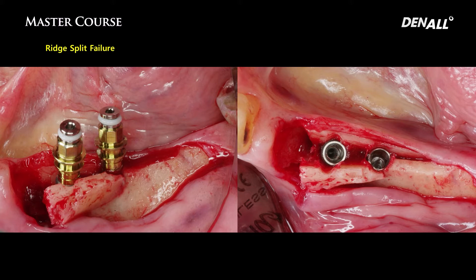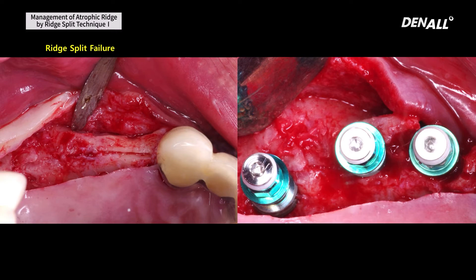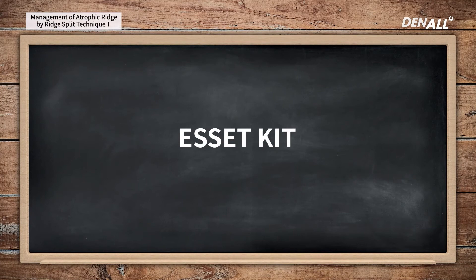In one example, the cortical bone was too thick — it did not split, but fractured. In another case, the split was done in the upper jaw where the cortical bone was too thin, and tearing occurred instead of splitting. In order to minimize various complications in doing ridge split, tools have been developed, and a kit called the asset kit was developed to make ridge split easier.